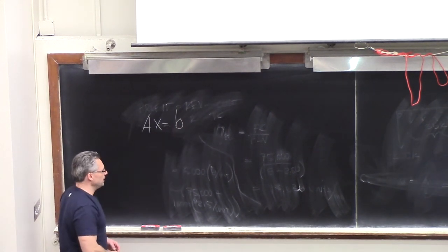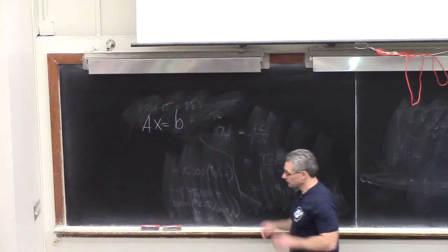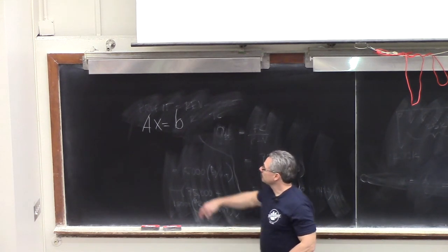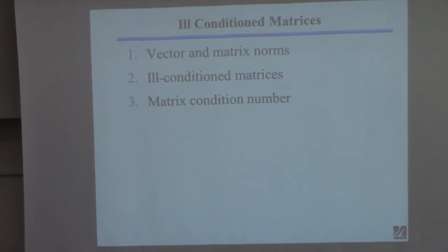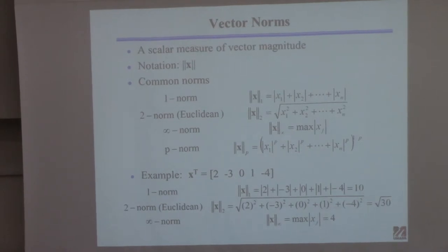We continue to discuss the equation problem Ax = B. This lecture is focused on a particular problem that often occurs when you try to solve these problems numerically, which has to do with something called ill-conditioning of the matrix A. I'll introduce vector and matrix norms, then the idea of what I mean by an ill-conditioned matrix, how you measure it using the condition number, and then four different examples.